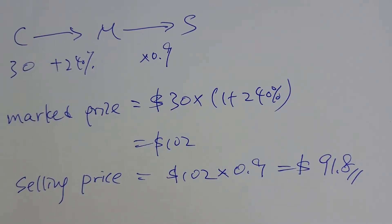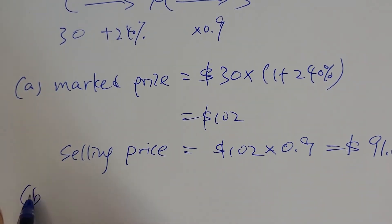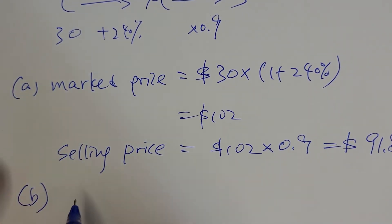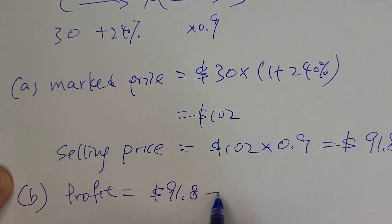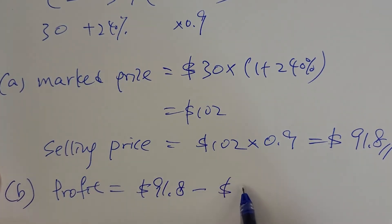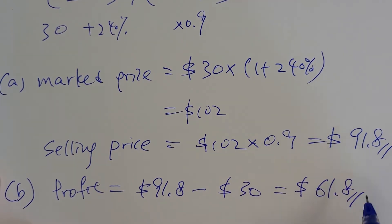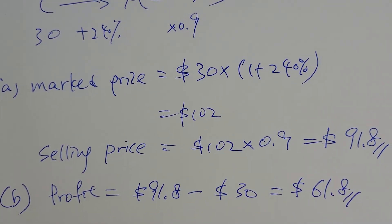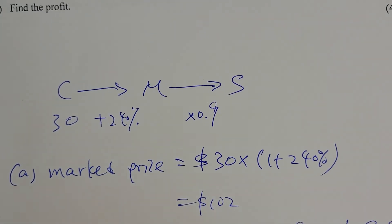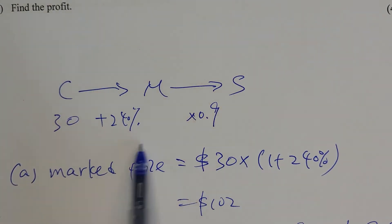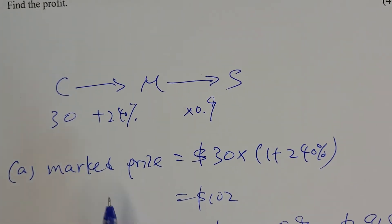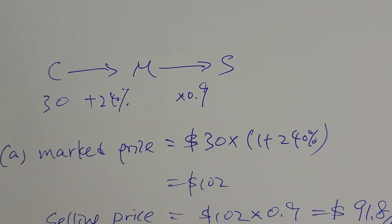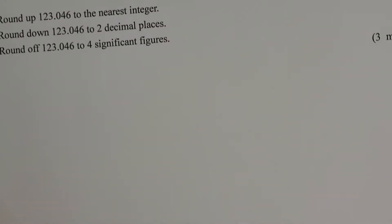That's part a. For part b, find the profit: profit equals selling price minus cost, so 91.8 minus 30 equals $61.80. Every time you consider cost price, mark price, and selling price, use the CMS model, then plug in the numbers and set up the equation — it's quite straightforward.